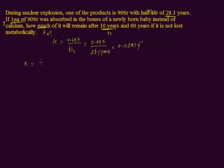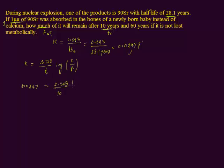The first-order rate equation is: k = 2.303 divided by t, times log of initial amount divided by final amount. Plugging in, k = 0.0247, which equals 2.303 divided by t = 10 years, times log of initial over final.